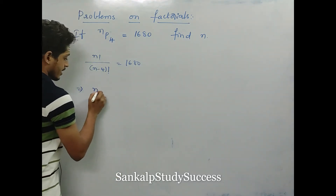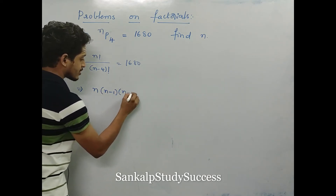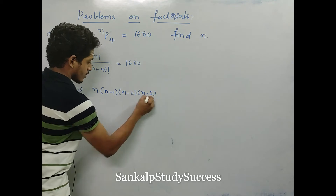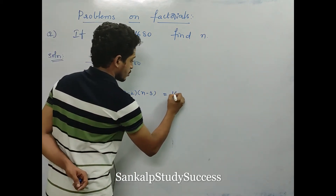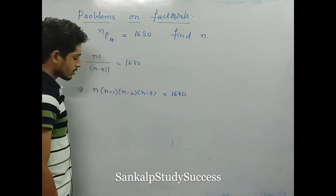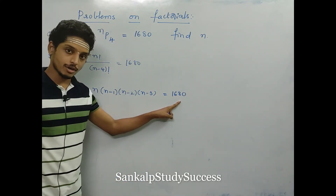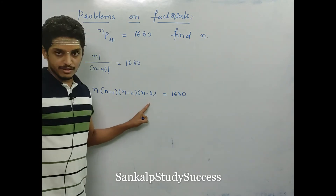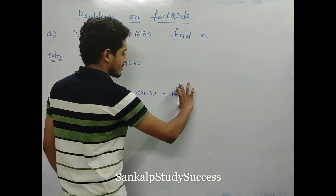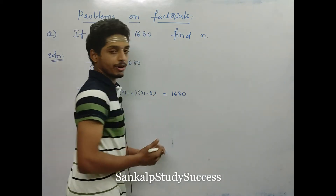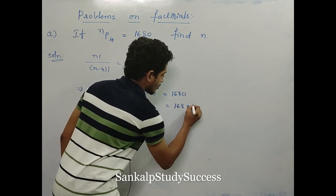When we start with 4 terms, the first term is n, then n minus 1, then n minus 2, then n minus 3 — 4 consecutive terms. This value equals 1680. So 1680 is the product of consecutive numbers. We can write 1680 as 8 into 10, meaning it is in the 8 table.